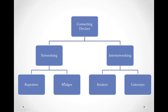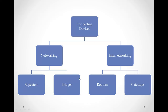Networking devices have two categories: repeaters and bridges. Networking devices operate at the physical and the data link layer. Internetworking devices operate at the network layer and the upper layers of the OSI seven-layer model, and include routers and gateways.